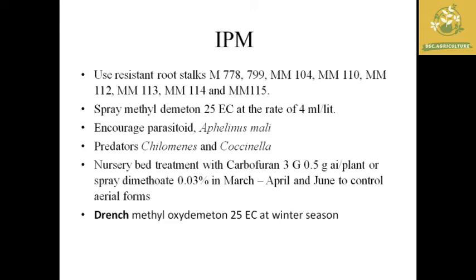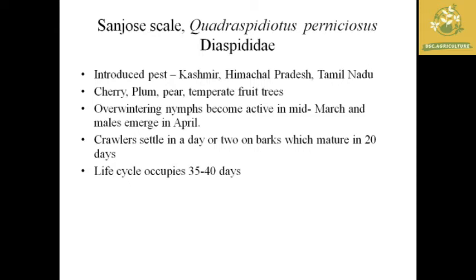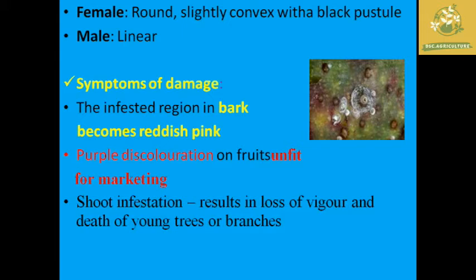The next pest is San Jose scale, where the scientific name is Quadraspidiotus perniciosus, belonging to the family Diaspidae. This pest is mainly found in Kashmir, Himachal Pradesh, and Tamil Nadu, and also attacks cherry, plum, pear, and other temperate fruit trees. They are active mainly during mid-March, males emerge in April, and the life cycle is around 35 to 40 days. The male is round and slightly convex with black pustules, while the female is more mobile than the male.